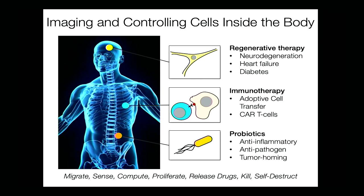We've seen beautiful recent successes in cell-based therapeutics — for example, immunotherapy where we take immune cells from cancer patients, genetically modify them to express receptors targeting specific epitopes on tumors, and send them back in to kill those tumors. Or engineered probiotics: bacteria genetically modified to detect inflammation and release anti-inflammatory compounds. One challenge today is that after injecting these sophisticated agents, we don't have good ways to see where they are, whether they're alive, or doing what we programmed them to do.